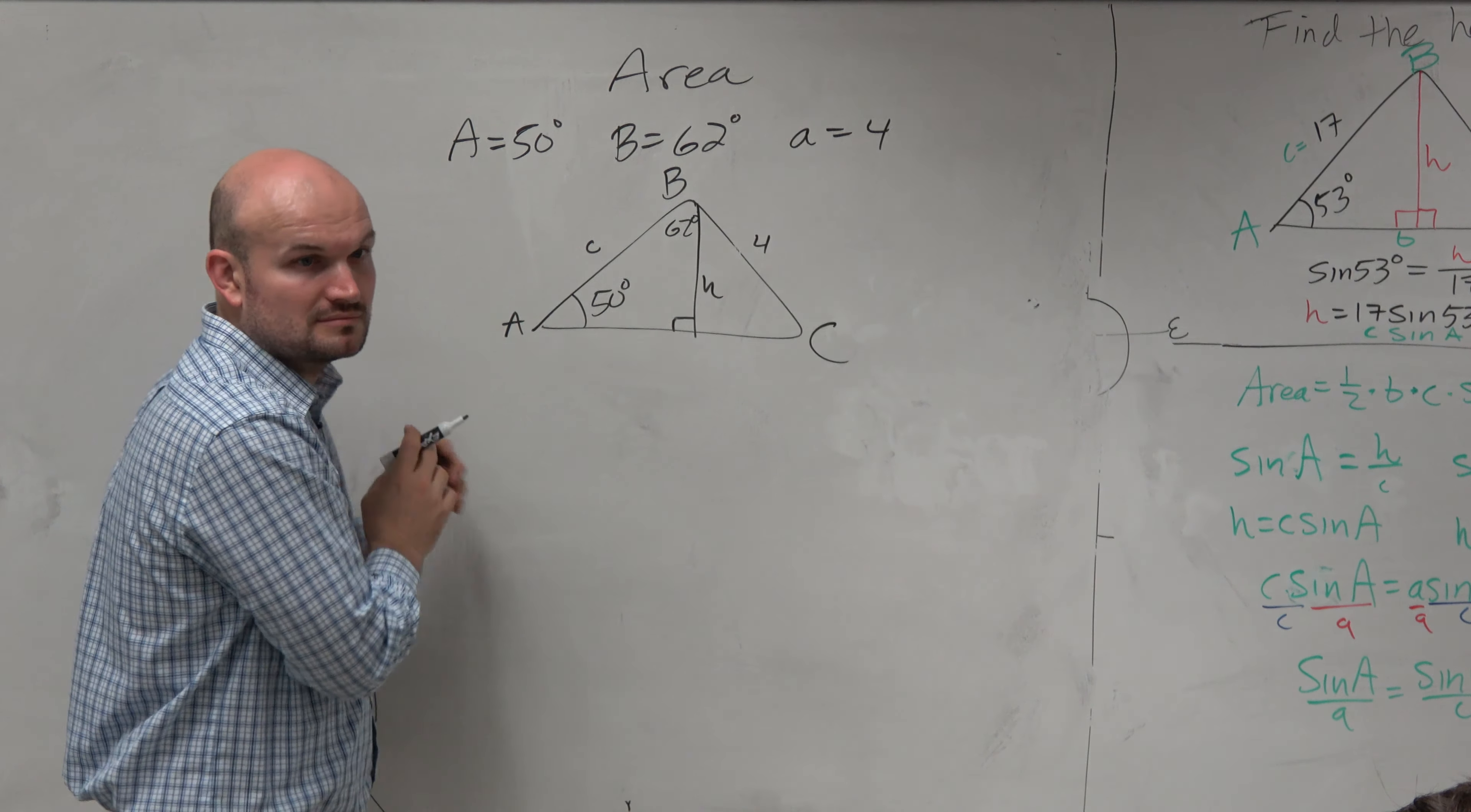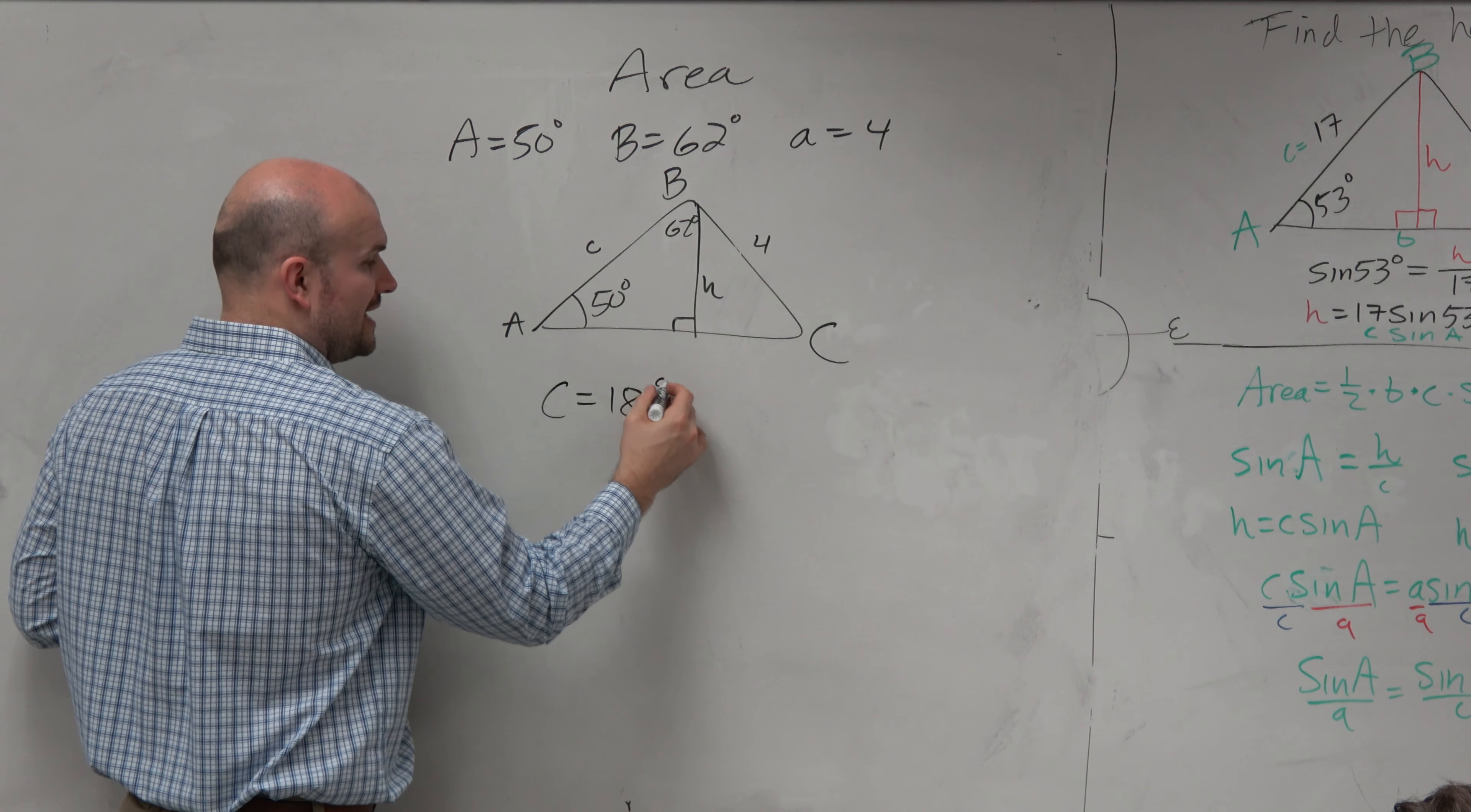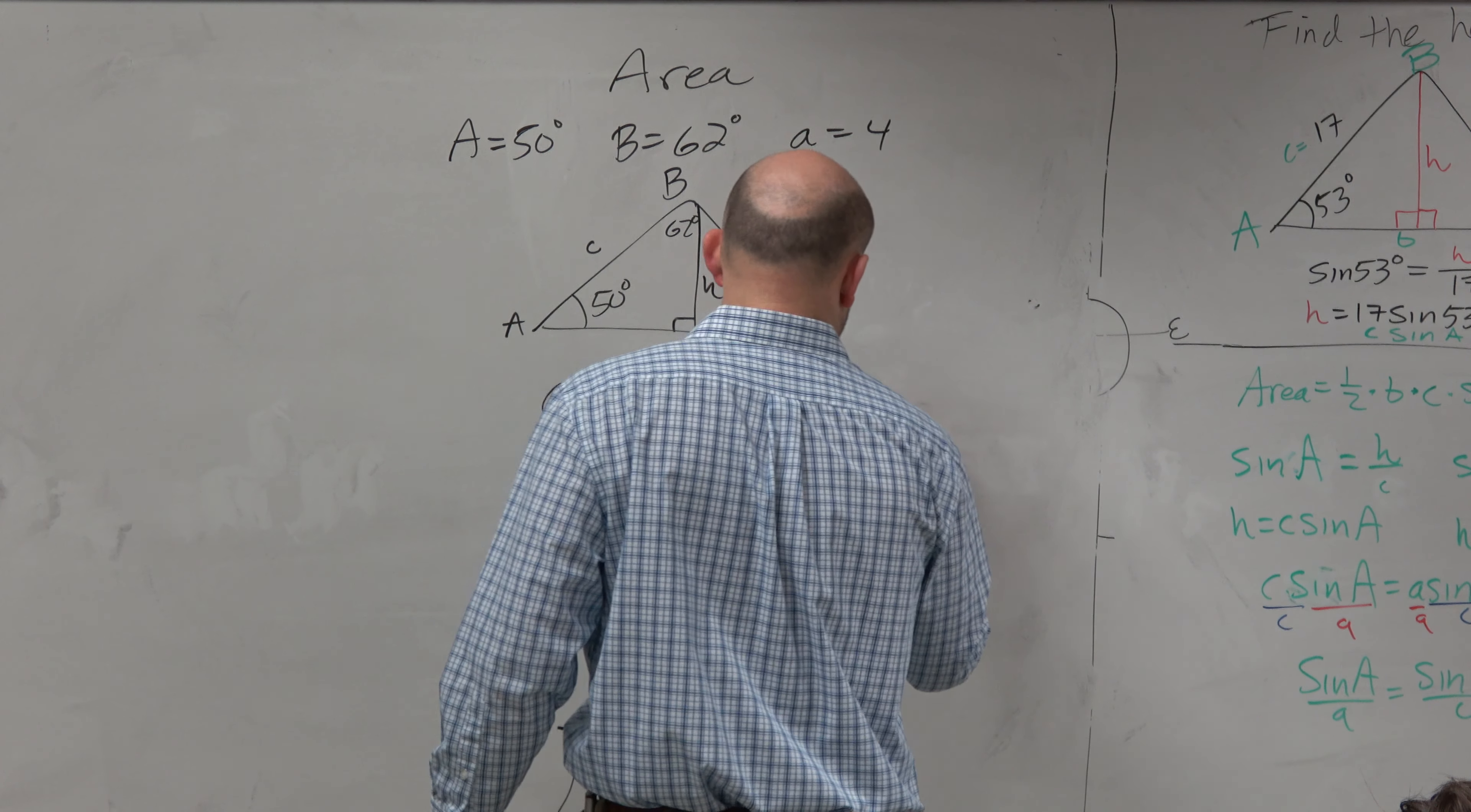Yeah, do you guys remember? Anybody remember? Yeah, sum of all the interior angles is 180 degrees. Yeah, the triangle angle interior sum theorem, right? So C, all angles in a triangle, add up to 180. So C equals 180 minus 50 minus 62 degrees. And then you get? 68 degrees. 68 degrees. Oh, yeah, I do that.